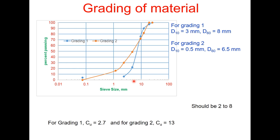And if you see D₆₀, D₆₀ for grading 1 is 8 millimeter and for grading 2 it is 6.5 millimeter and therefore the coefficient of uniformity will be 2.7 for grading 1 and 13 for grading 2 and what the code says that this value should be 2 to 8. For a single size aggregate the Cu will be 1 and therefore grading 1 is better in terms of permeability.